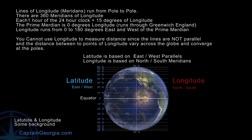Each hour of the clock equals 15 degrees of longitude. You can't use longitude to measure distance because the lines are not parallel. We always use latitude — we never use longitude.